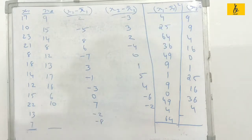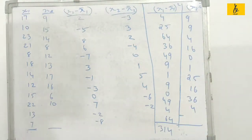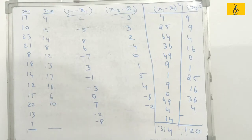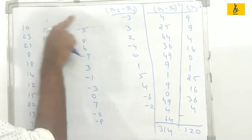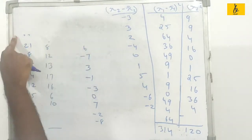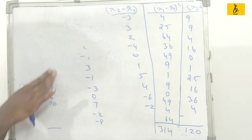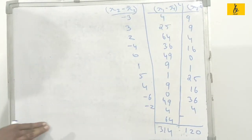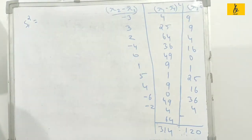The sum of x1 minus x1 bar squared is 114. The sum of x2 minus x2 bar squared is 90. Now we calculate the F-test ratio: S1 square divided by S2 square. S1 square is sigma x1 minus x1 bar whole square divided by n1 minus 1.